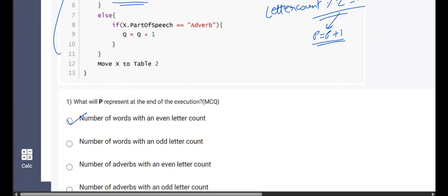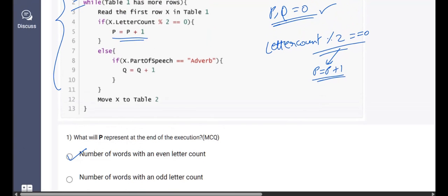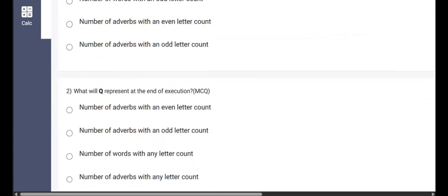So for the first question, option A is correct. Now coming to the second half of the pseudocode, else if this is not the condition satisfied, then we'll be moving on to the next part, which is if part of speech is an adverb. But remember one thing, if this is satisfying, that means this even letter count does not satisfy. So what does Q store? Q stores the number of adverbs with odd letter count. So number of adverbs with an odd letter count is the most suitable answer. With this, we have solved both question one and question two.